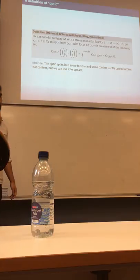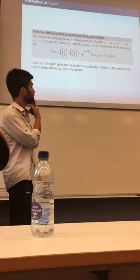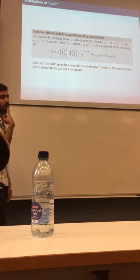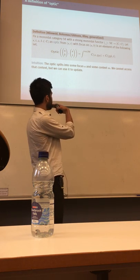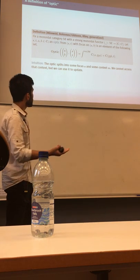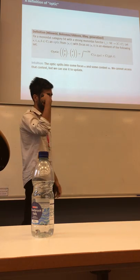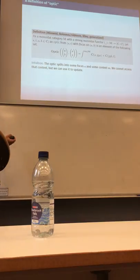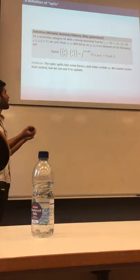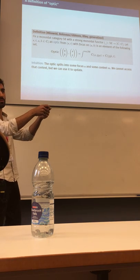So this is the definition of an optic, which is expressed using a coend. We fix first some monoidal action, which is a strong monoidal functor from a monoidal category into the category of endofunctors. Then we say that the optic from (S,T) with focus on (A,B) is given by: there exists some M in the monoidal category such that we can split S into M applied to A, and when we have M applied to B, we can get that back into T.